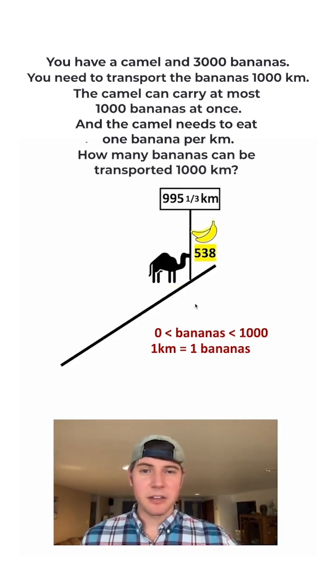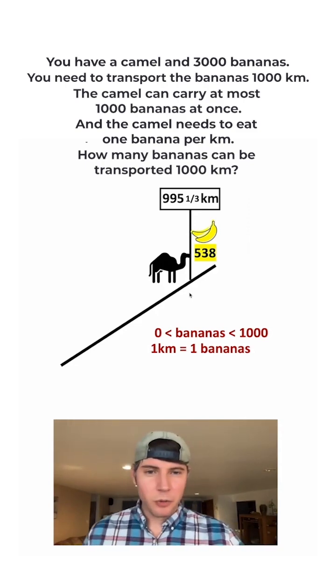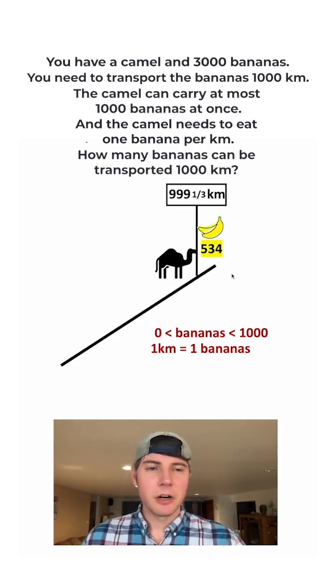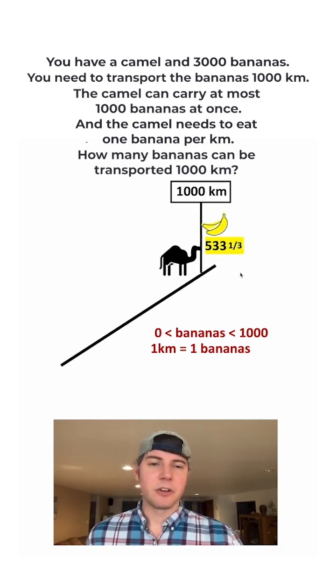And let's go another 60 miles. So now we're at 995 and he has 538 bananas. Let's go another four miles. This will be 999 and 534. And now he just has two-thirds of a kilometer to go. So he's going to eat two-thirds of a banana, giving him 533 and one-third bananas. And now he's gotten the whole 1,000 kilometers.